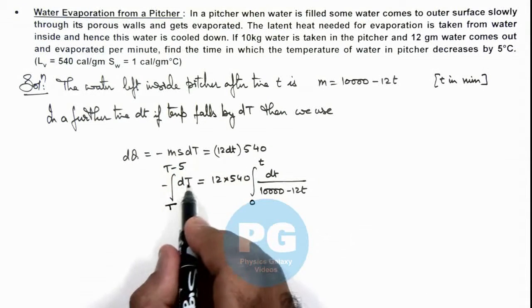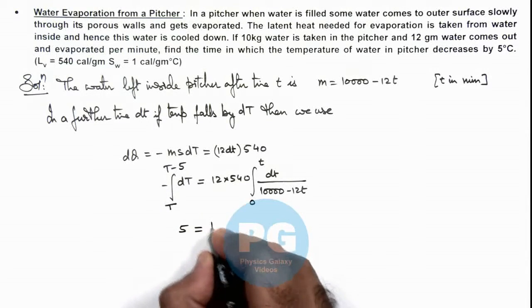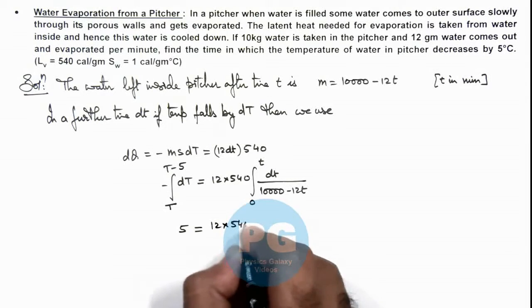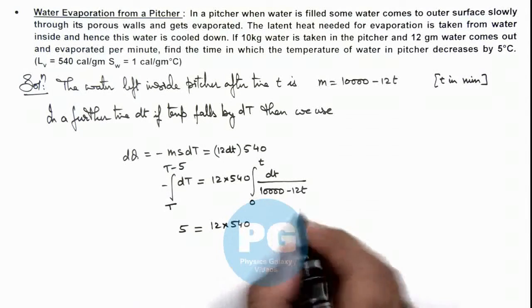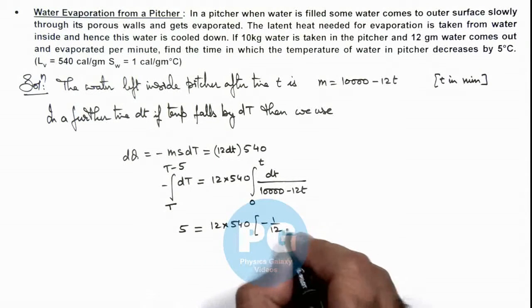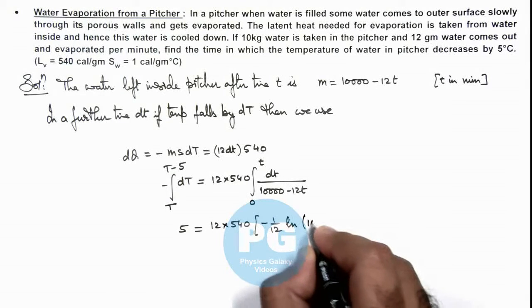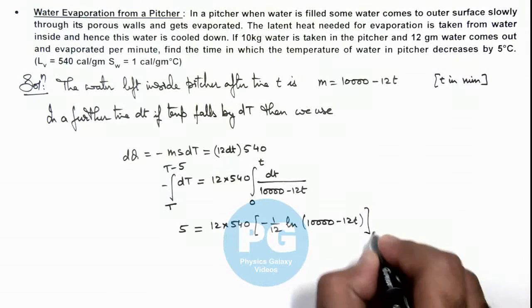So here left hand side after integration becomes 5 and right hand side this will be 12 multiplied by 540, and on integration of this integrand it will give us minus 1 by 12 ln of 10,000 minus 12t and limit we substitute from 0 to t.